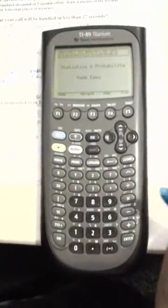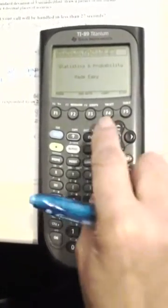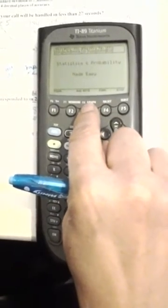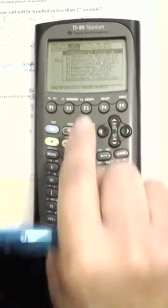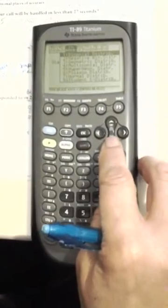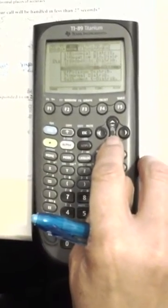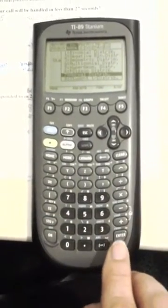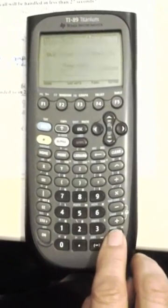First, go to the Statistics Probability Made Easy program you downloaded to your calculator. Press F3, which is the distribution function. This is a normal distribution, so scroll down to number 7, the normal distribution function, and press Enter.